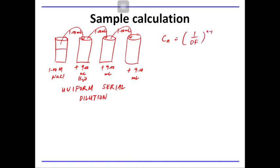So suppose C1 is the original, this one is C2, C3, and C4. Cn is the concentration at the dilution that we are interested in. For example, at the third dilution, which is C4.